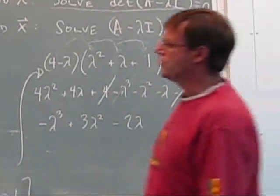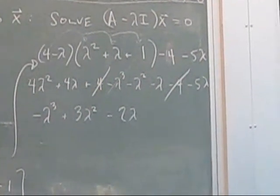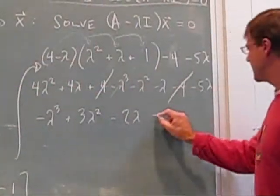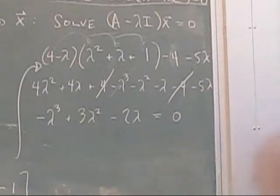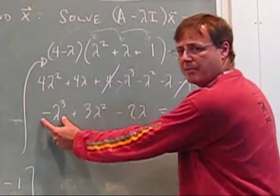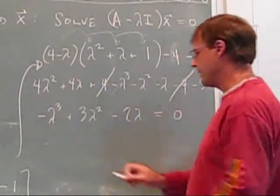Remember that what we're doing is we're setting this determinant equal to 0, so we'll take this and set this equal to 0. So you might prefer to have the leading term have a positive, so let's bring everything over to the other side.